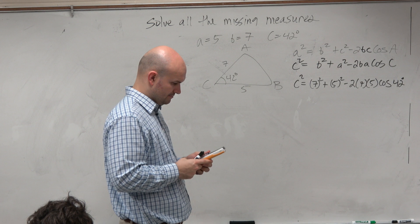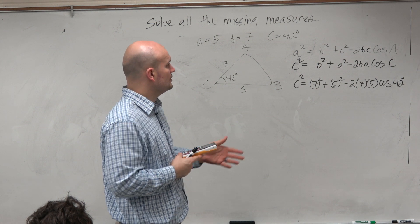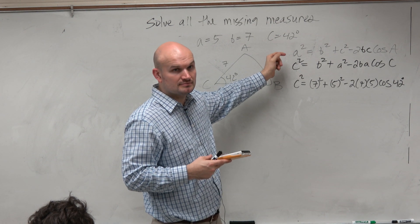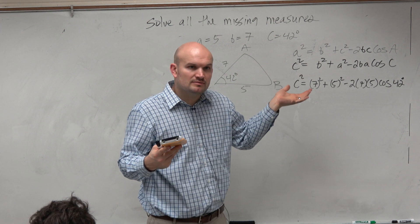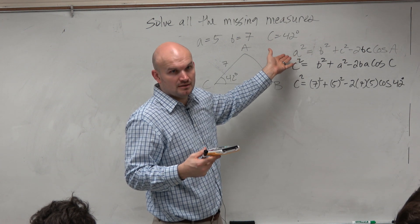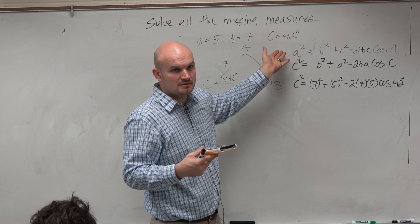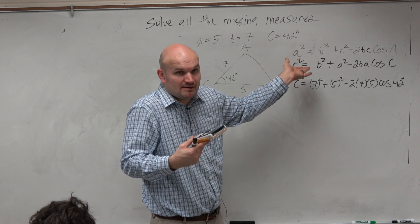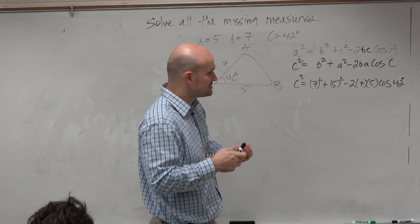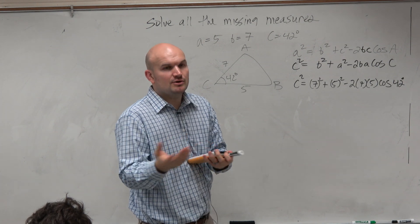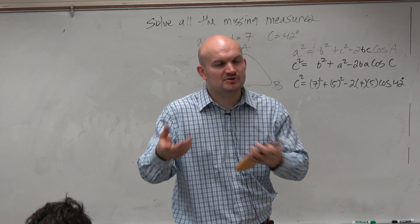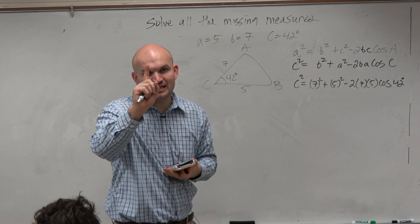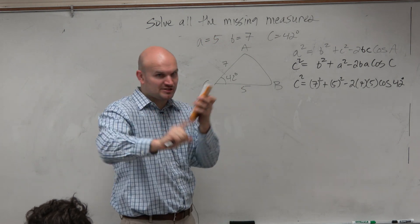Why did I isolate c at the beginning? I just swapped the variables — I didn't isolate c, I just swapped the variables. Because they're all interchangeable; we could label this triangle any way we wanted to. Eventually you need to solve for a, b, and c. So why write down the same equation for all the different variables when they can all be interchanged? That's why you're only given one equation — you just need to make sure you can interchange them.